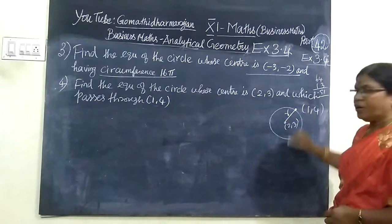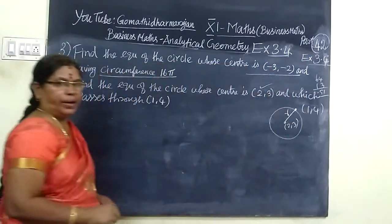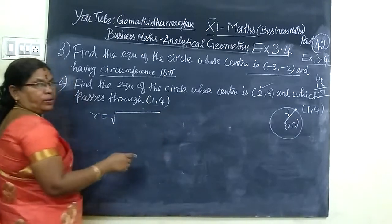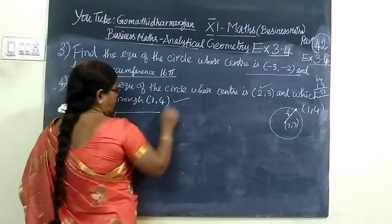If you join the center to the point, you make the radius. You know the center and you can find the radius. So we use the distance formula since you know two points.